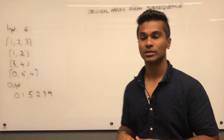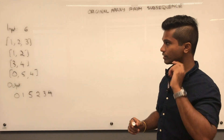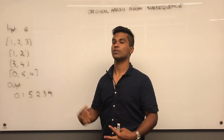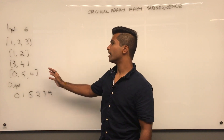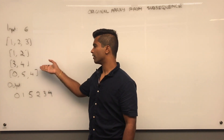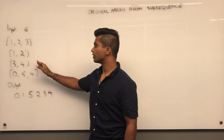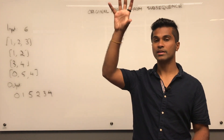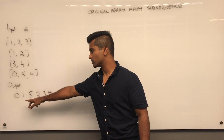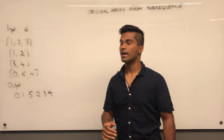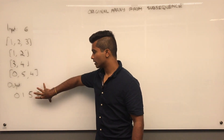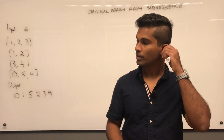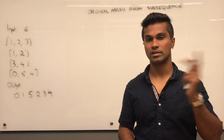Today we're going to go over the problem 'Original Array from Subsequence.' The input is a number — let's say six — which is the total number of unique characters or numbers. The other part of the input is a 2D grid of integers representing subsequences of an array. We have to construct the original array, in this case 0 1 5 2 3 4, using those subsequences. Let's first go over the difference between a subsequence and a subarray.